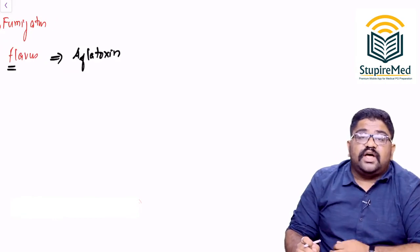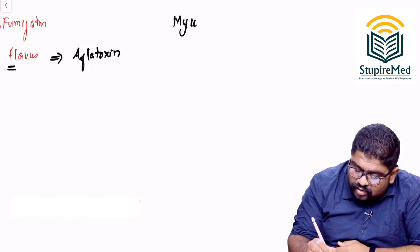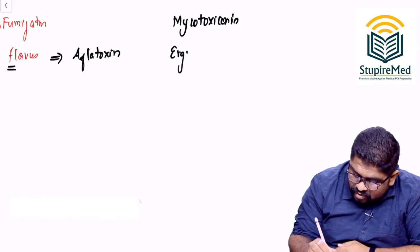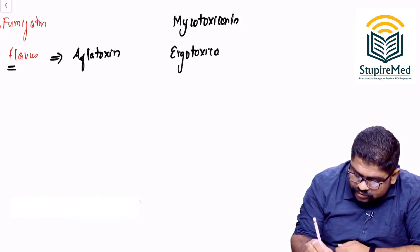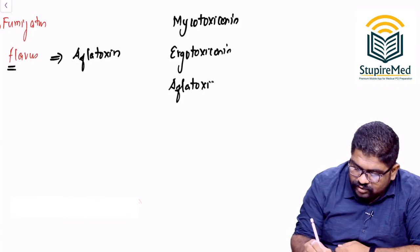Now that brings us to the question, what are the different kinds of poisoning that can happen through a fungus? You have something called Mycotoxicosis, you have Ergotoxicosis, and you have Aflatoxicosis.